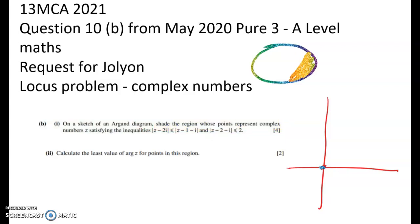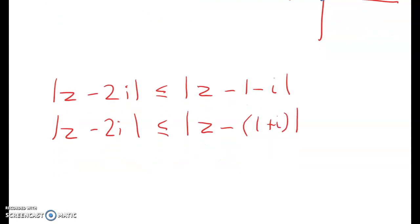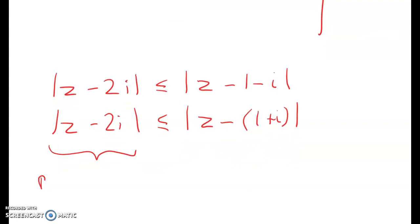The first thing to look at are the two loci separately. So let's do this one here, which is the perpendicular bisector. First, I'm going to do this just using the graph. Looking here, we've got z, the distance between z and 2i is less than or equal to the distance between z and something. So we're going to rewrite this into this form here, z minus 1 plus i.